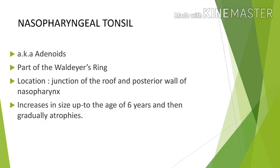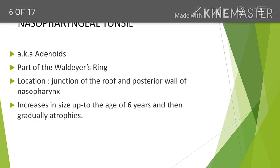Next, the nasopharyngeal tonsil, commonly called the adenoids. It is a part of Waldeyer's ring — a sub-epithelial collection of lymphoid tissue. Its location is at the junction of the roof and the posterior wall of the nasopharynx. Importantly, it causes the overlying mucous membrane to be thrown into radiating folds, making it clearly visible.